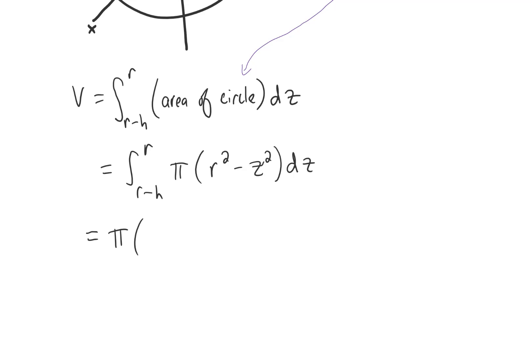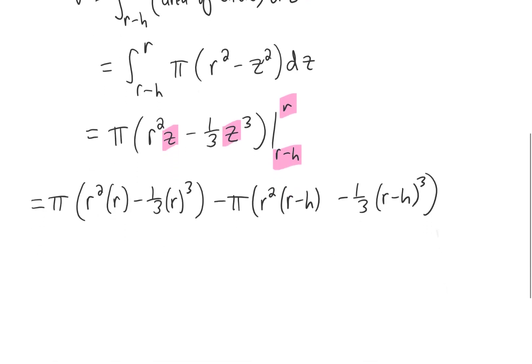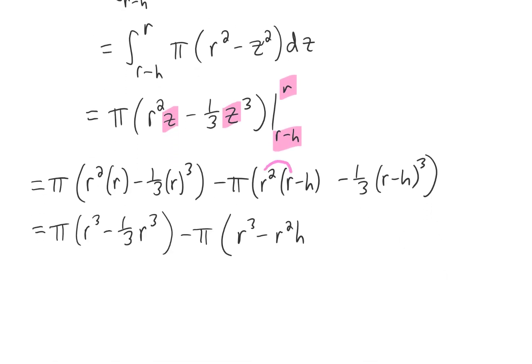Now we just need to integrate with respect to z and plug in our upper and lower limits. With respect to z, r squared is just a constant, so integrating it means we tack a z onto it. Integrating z squared with respect to z gives us one-third z cubed. We then plug in our upper and lower limits of integration for z, and that is going to give us the following line.